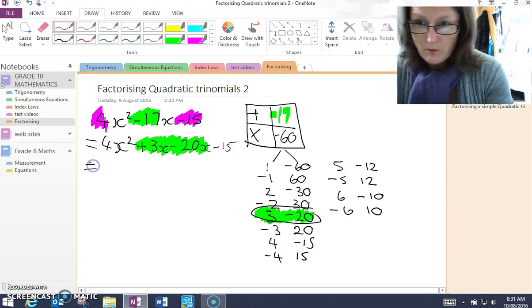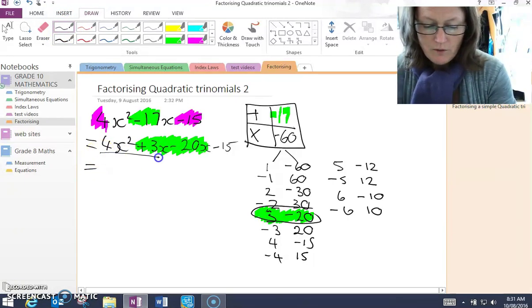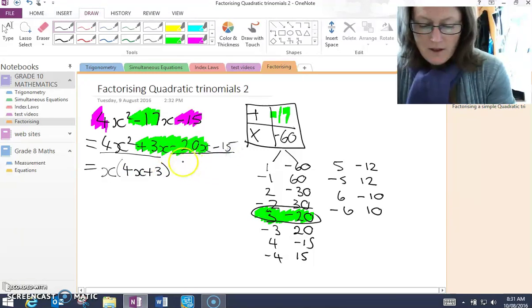So from here, I do my grouping 2 and 2. If I look at the first two terms, x is common. If I take x out, I'm left with 4x plus 3. If I look at my second two terms, negative 5 is common. If I take that out, I get left with 4x plus 3.